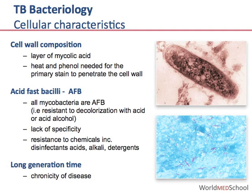Importantly, the cell wall comprises an outer layer of mycolic acid. This outer layer is a key reason why a combination of heat and phenol is required in order to stain the bacilli and allow the primary stain of carbol fuchsin to penetrate the cell wall. Mycobacteria's acid-fastness refers to the bacilli's resistance to decolouration with strong acids or acid alcohol once stained with the primary stain carbol fuchsin. Although the detection of acid-fast bacilli is the primary diagnostic test for active tuberculosis, especially in resource-limited settings, it is not specific for Mycobacterium tuberculosis as all mycobacteria are acid-fast.